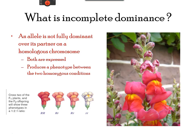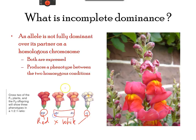Incomplete dominance indicates that neither the dominant nor recessive phenotype is fully expressed; rather, a third phenotype is expressed. An example shown here is when a red and white snapdragon were crossed, the results were pink flowers. In such a case, the phenotypic ratio is 1:2:1.